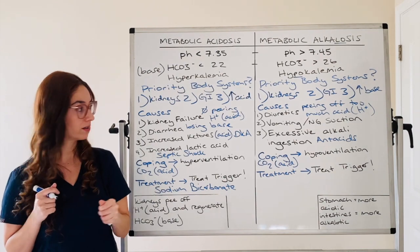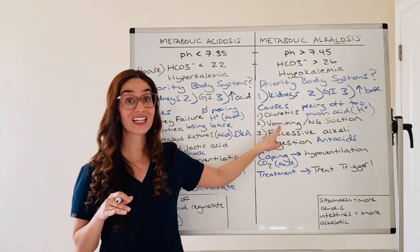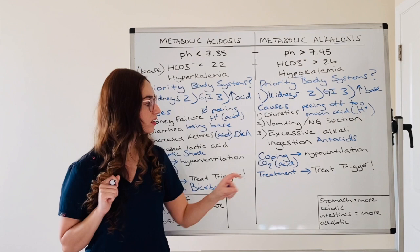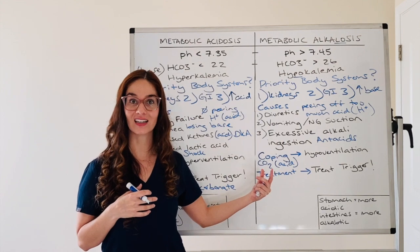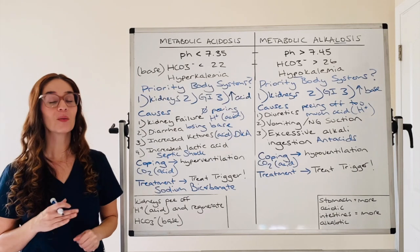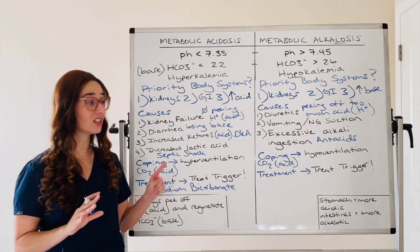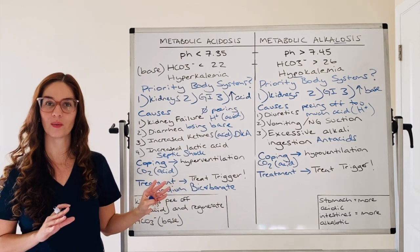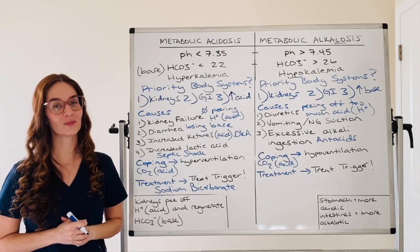Just like metabolic acidosis, your primary treatment is to treat your trigger. We should stop the diuretic administration. For vomiting, we could give an antiemetic. We could stop the continuous NG wall suction. We could stop the excessive ingestion of alkaline products. I hope this helps — I know this can be a confusing topic, but just keep it basic. Compare and contrast disorders when you can, and you can see they are pretty much opposite of one another, which is a nice way to remember it. We are better together. If this helps you, try to help someone else.